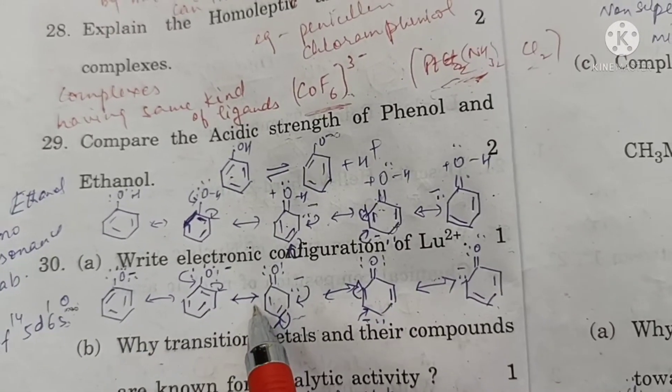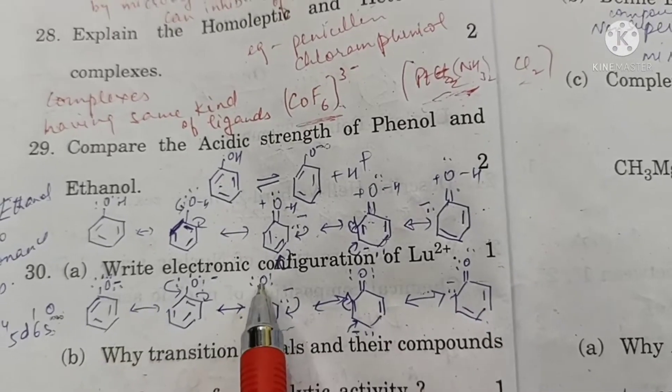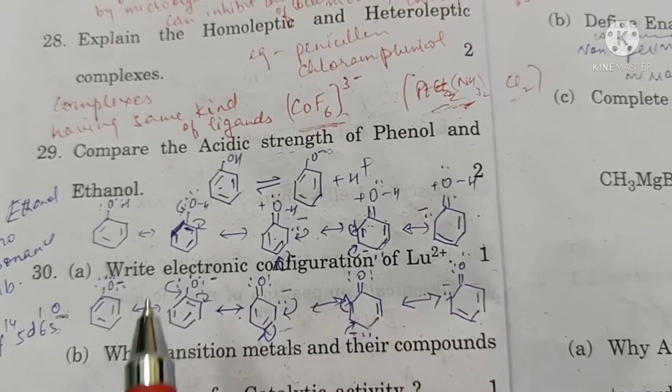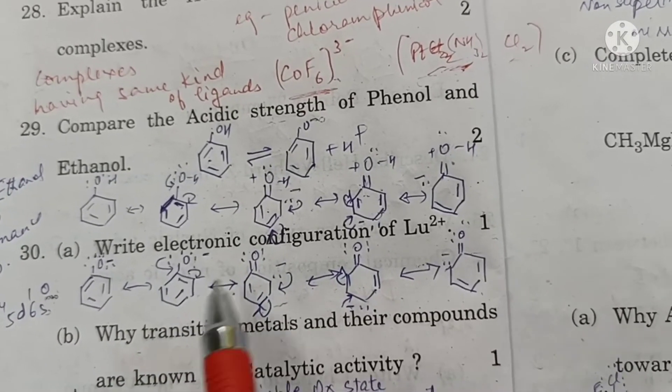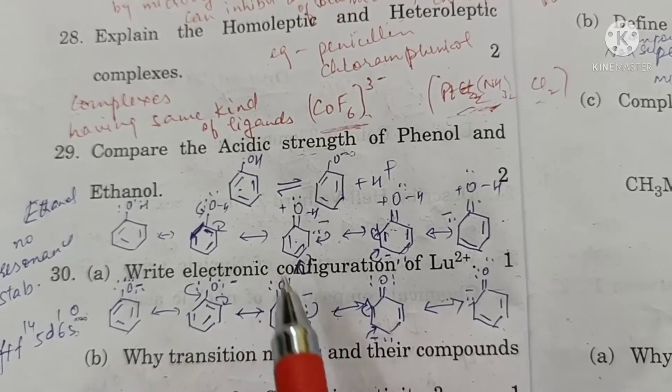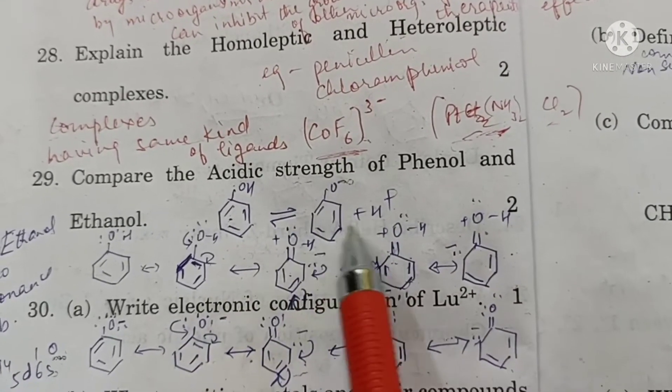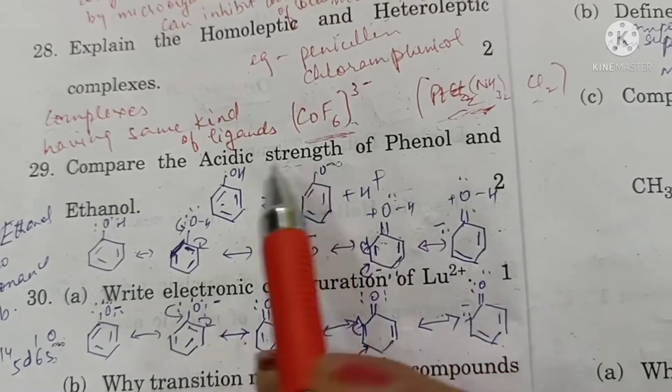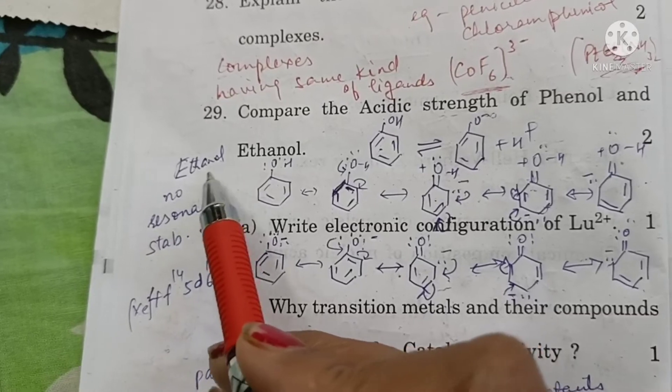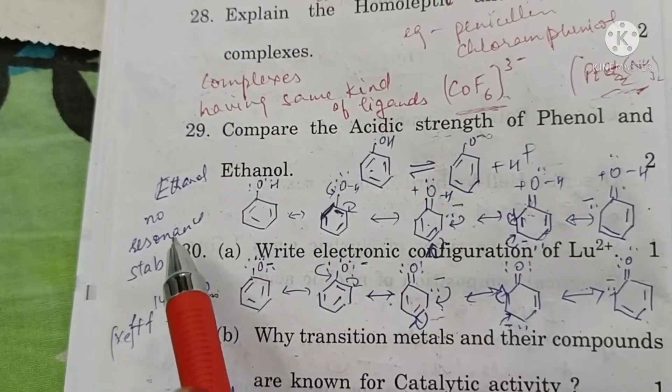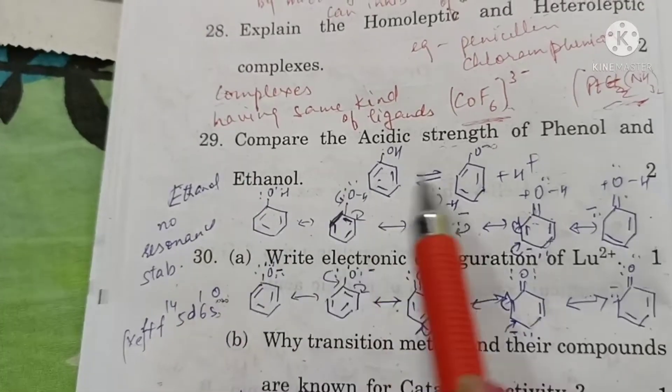Whereas, in the phenoxide ion, resonance occurs in such a way that there is only one negative charge, no charge separation and also negative charges on the oxygen atom are distributed on the ring. So phenoxide ion is more stable than phenol. So reaction moves in forward direction by giving a proton. So phenols are acidic in nature. Ethanol does not show resonance, it is not resonance stabilized. So it is less acidic than phenol.